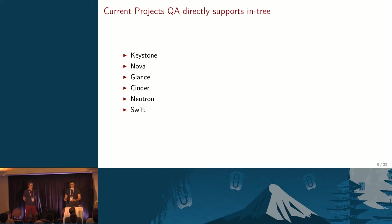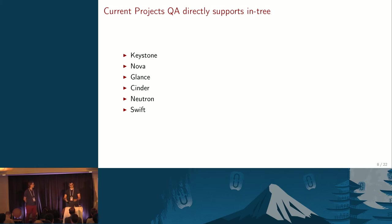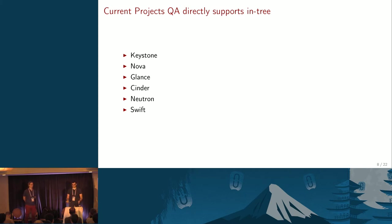For today, the current definition of that core set from the QA team perspective is Keystone, Nova, Glance, Cinder, Neutron, and Swift. These are the projects that we eventually want to be the only ones with in-tree direct support. So in Tempest, the only tests in the Tempest tree will be for these projects. For DevStack, the only things in the DevStack tree will be for these projects. Any other projects that fall outside of this will be in a plug-in, and we advertise the plug-ins and make it as easy as possible to run them.